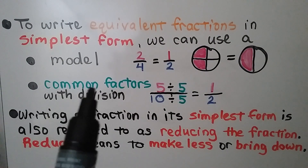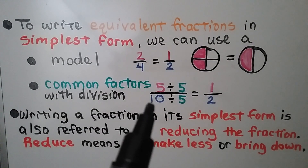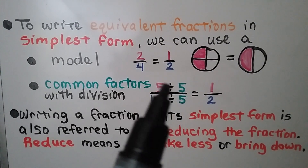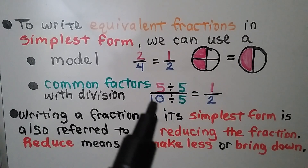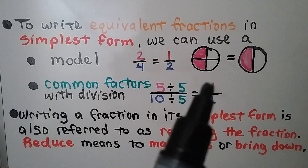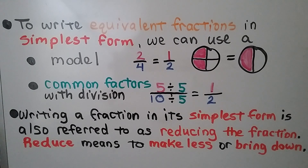We can also use common factors with division. We have five-tenths. Five and ten have five as a common factor. We do division: five divided by five is equal to one, and ten divided by five is equal to two. So five-tenths is equal to one-half. Writing a fraction in its simplest form is also referred to as reducing the fraction, and reduce means to make less or bring down.